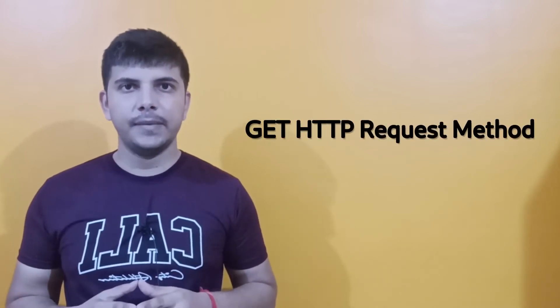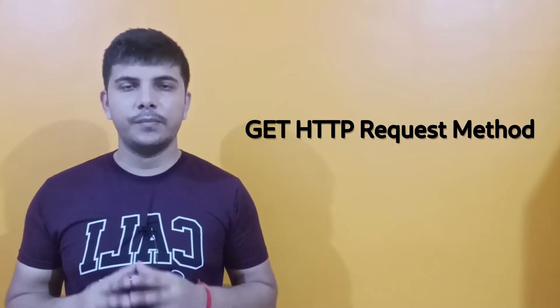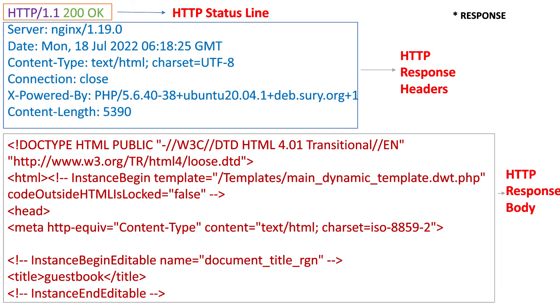Now let's look at the most important HTTP request methods that are generally used. The very first method is the GET method, which is used to retrieve the content of a particular resource. Remember, the resource is defined by its path. Whenever a GET request is made, we will mostly retrieve the response status line, response headers, and also a response body. So to retrieve the content we use the GET method.